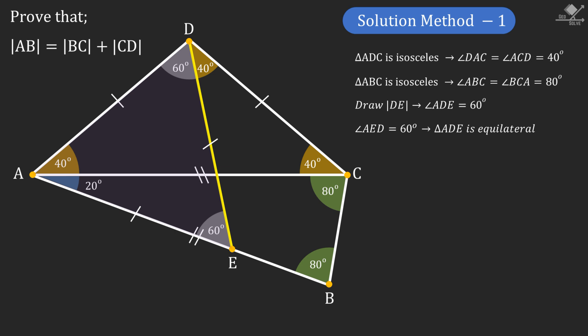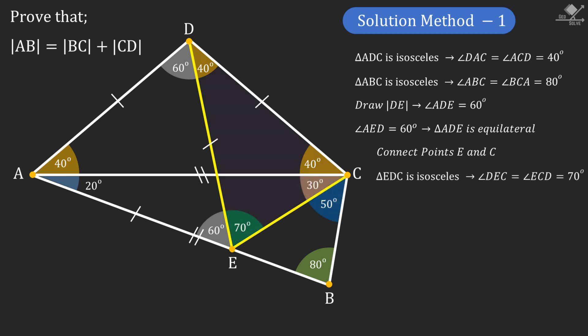Now let's connect points E and C. From here, base angles of the isosceles triangle EDC can be calculated as 70 degrees. From triangle EBC we can calculate the missing angle as 50 degrees and see that this triangle is also an isosceles triangle.